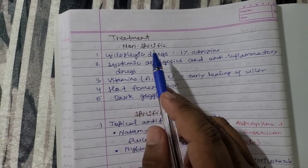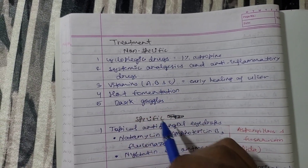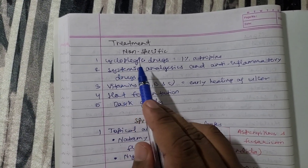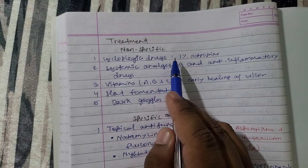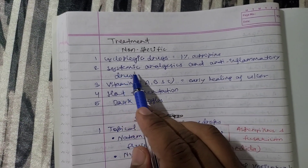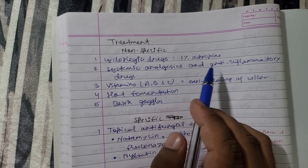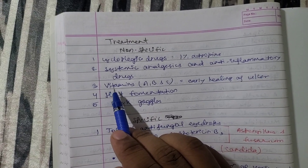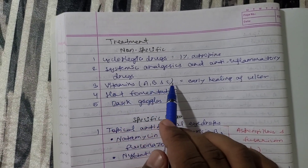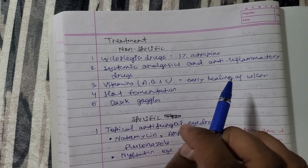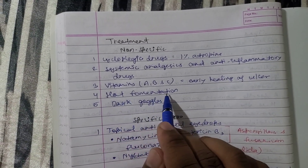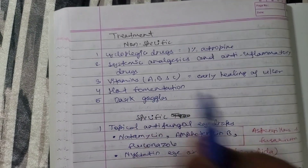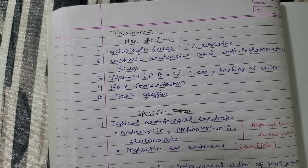Treatment has two categories: non-specific and specific. Non-specific treatment includes: 1) cycloplegic drug — 1% atropine; 2) systemic analgesic anti-inflammatory drugs; 3) vitamin A, B, and C for early healing of the ulcer; 4) hot fomentation; 5) dark goggles.